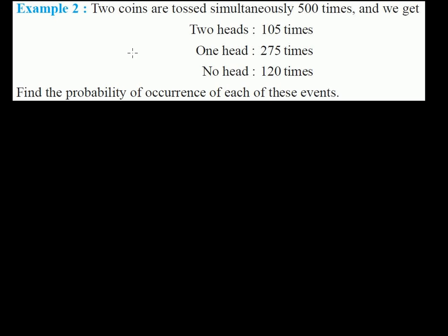In this video we're going to solve another problem. In the previous video we solved a problem related to probability where we tossed only one coin. Here we are tossing two coins. The question: two coins are tossed simultaneously 500 times. We get two heads 105 times, one head 275 times, and no head 120 times. We have to find the probability of the occurrence of each of these events.